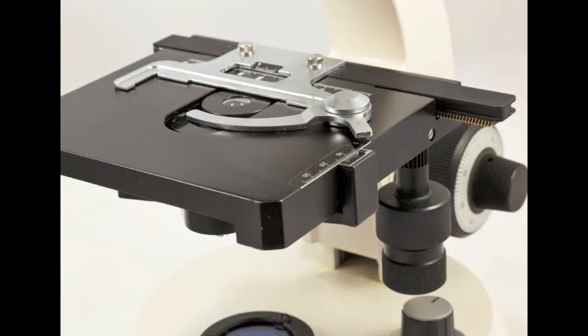Now let's look at the stage in more detail. In older microscopes, the stage is simply a flat surface on which to place the slide. On most modern microscopes, including ours, the stage is a fairly complex mechanical device.